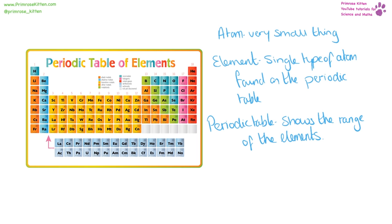Here we have our wonderful, beautiful periodic table. It is a list of all the elements which are known to exist. Elements are a single type of atom, and an atom's a very, very small thing. The word atom is actually Greek for uncuttable. When they named them, they thought it was the smallest thing possible. The periodic table tells us loads of information about the elements, and there are still loads yet to be discovered.